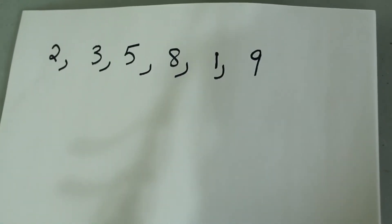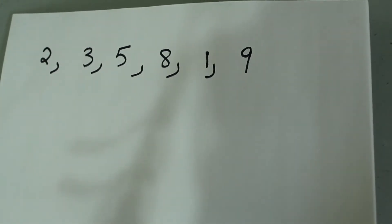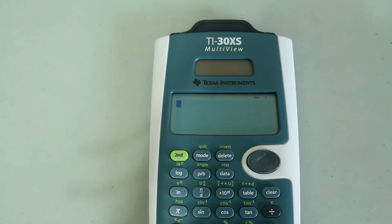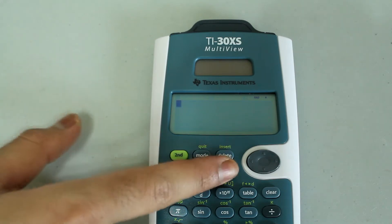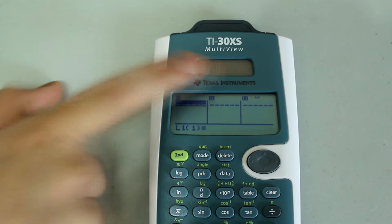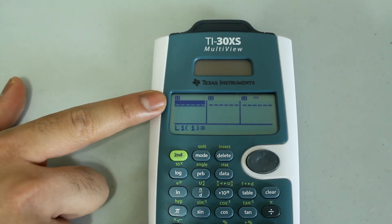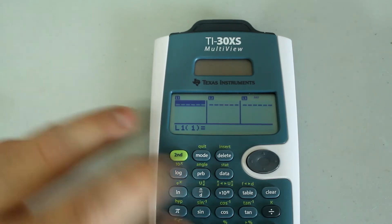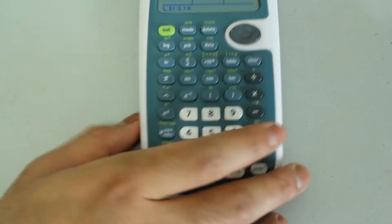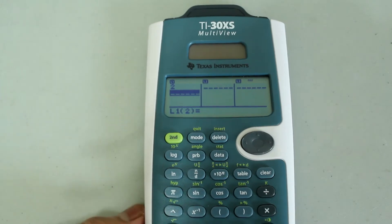The first data set I'm going to work with is as follows: 2, 3, 5, 8, 1, and 9. In order to enter these data into the calculator, press the data button, and then this screen comes up with lists L1, L2, and L3. I'm going to type my numbers into L1, so I'm just going to type in the first number, which is 2, and then press enter. So 2 appears in the list, and I'm going to do that for all the other data points.